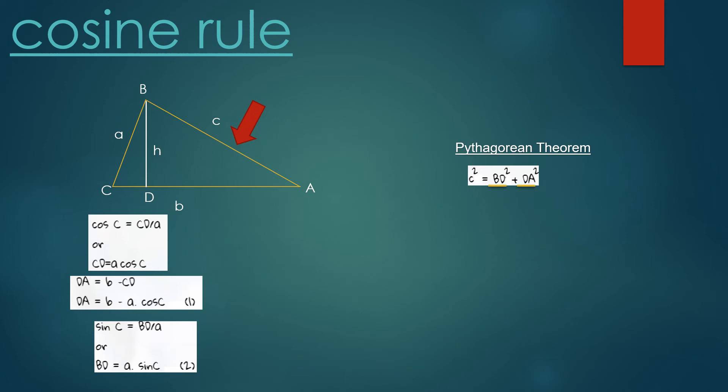Now if we substitute for BD and DA from equations one and two, then we have this relation: c² = (a sin C)² + (b - a cos C)². By expanding it, we get this relation.